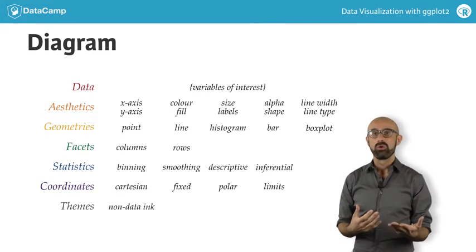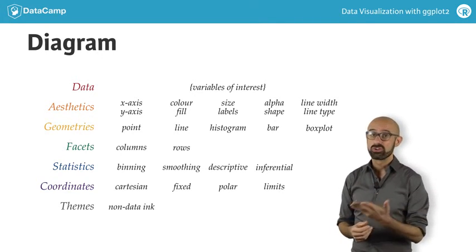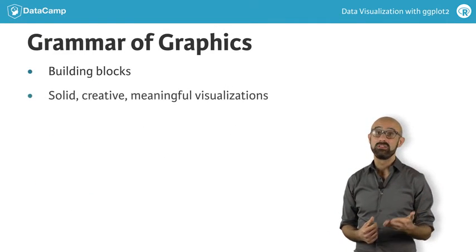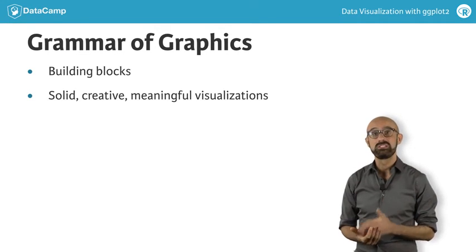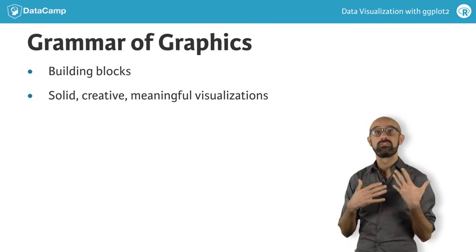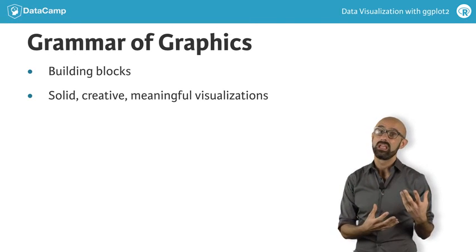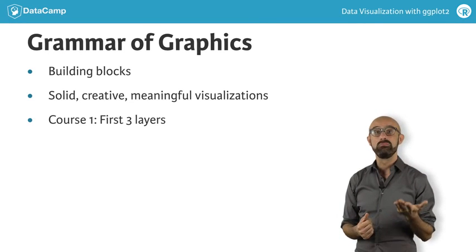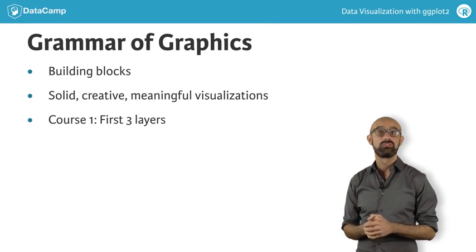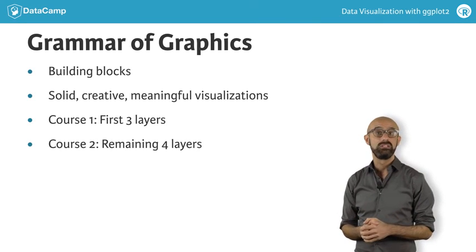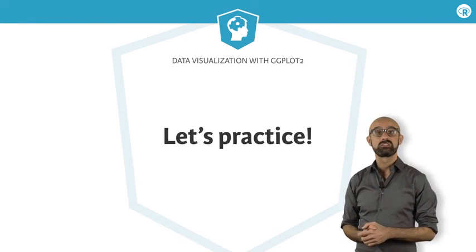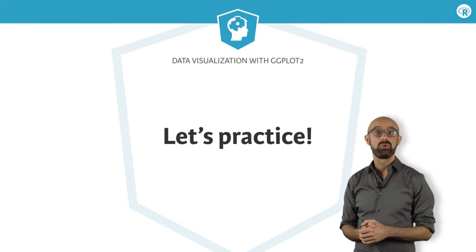Whenever we make a plot, we are choosing from these items, and even more which are not shown. The grammar of graphics establishes the building blocks for solid, creative, and meaningful data visualizations. This means we are not limited to specific standard forms of expression, because now we have a framework that allows us to communicate in a way that best suits our goal. By the end of this course, you will be able to generate meaningful exploratory plots using the first three layers. In the next courses, we'll go into detail on the remaining four optional layers. Let's head over to the exercises and explore one of the datasets you'll be using throughout the two courses.